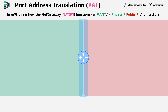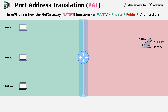Let's step through an example, because this will make it easier to understand. The example we'll be using is three private devices on the left, all wanting to access CatFlix on the right, which has a public IP of 1.3.3.7 and is accessed using TCP port 443, which in this case is HTTPS. I'll be colour-coding the laptops: red for the top, purple for the middle, and yellow at the bottom.